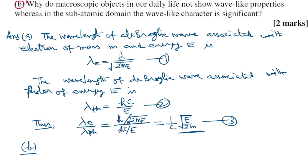Part B: Why do macroscopic objects in our daily life not show wave-like properties, whereas in the sub-atomic domain the wave-like character is significant? For macroscopic objects in day-to-day life, the wavelength of the de Broglie wave is negligible compared to the size of the object, and hence these are not visible.